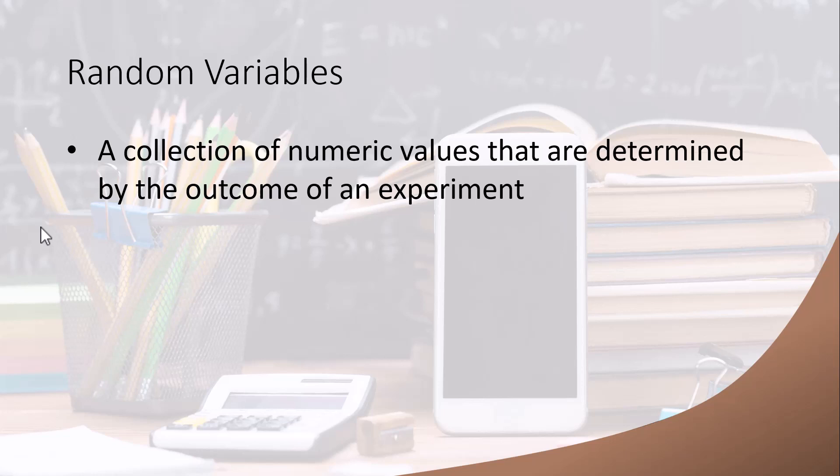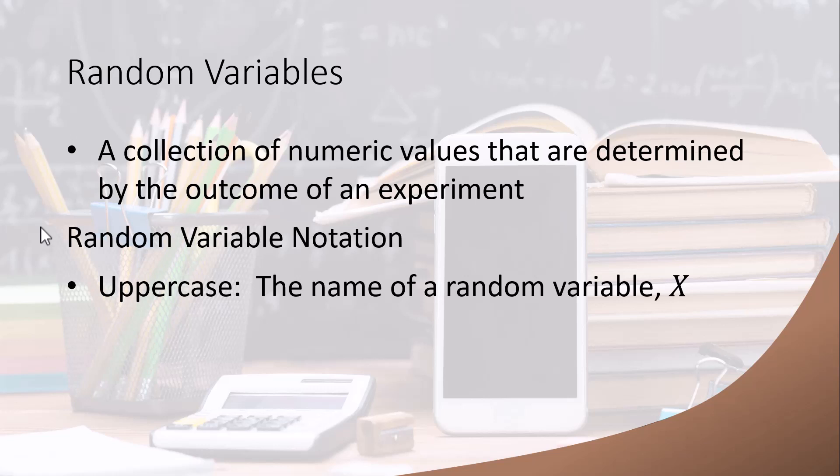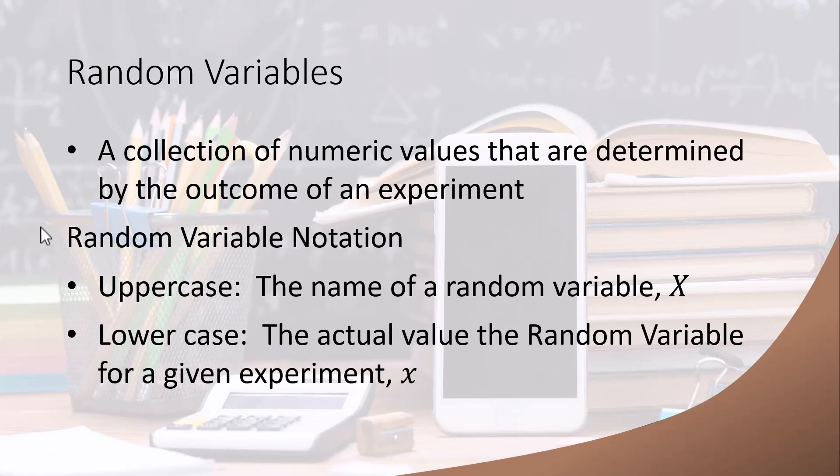Sometimes the numbering is trivial, like it might be for the roll of a die. Other times it may not be as straightforward. We do have a notation for random variables — the random variable will always be denoted by an uppercase letter, like uppercase X. The specific values that a random variable can take on will be noted by either that value or the lowercase letter x.